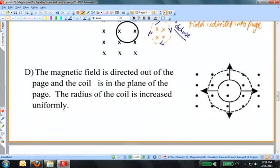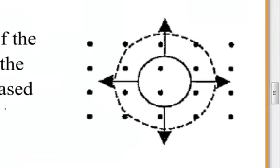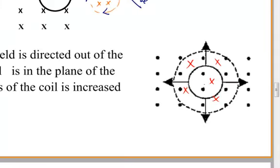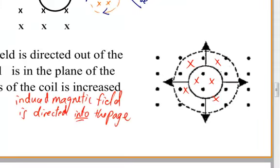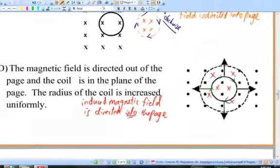Part D: A magnetic field is directed out of the page, and the coil is in the plane of the page. The radius of the coil is increased uniformly, so the area of the coil becomes larger, enveloping larger and larger magnetic fields. Is the magnetic flux changing? Yes. The magnetic flux is increasing, so the coil wants to resist that change and creates an induced magnetic field in the opposite direction — into the page. Applying the right-hand rule, the induced current must flow in the clockwise direction to produce a magnetic field into the page.